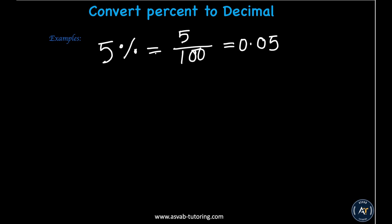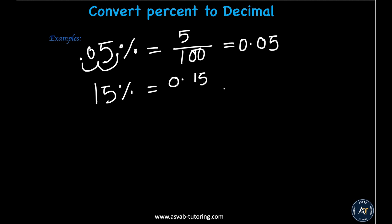To convert from percent to decimal, you need to move two decimal places from right to left. The decimal is always at the end if you don't have any decimal inside the number. So for 15%, that gives you 0.15.